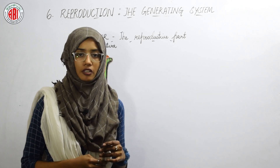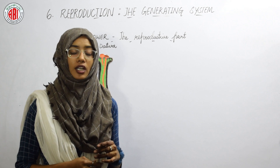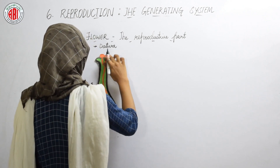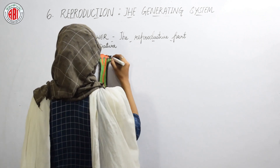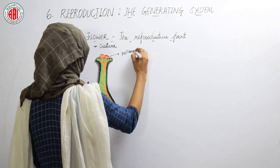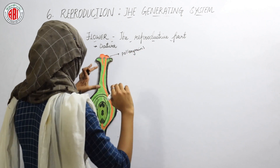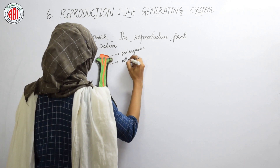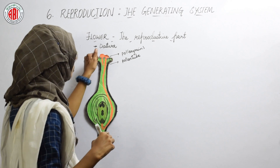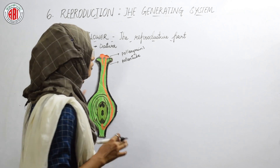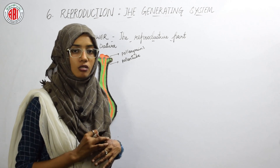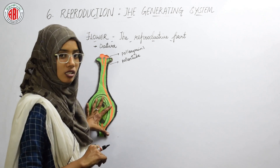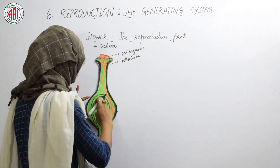The male reproductive parts show the presence of stamens and pollen grains. When we look at the structure of pollen grains under the microscope, we can find ball-like structures — these are the pollen grains that stick on the stigma. When pollen grains become mature, they show an extension called the pollen tube. After the formation of this pollen tube, it reaches the embryo sac of the ovule. The female reproductive organs show the presence of stigma, style, and ovary, and inside the ovary we find ovules.